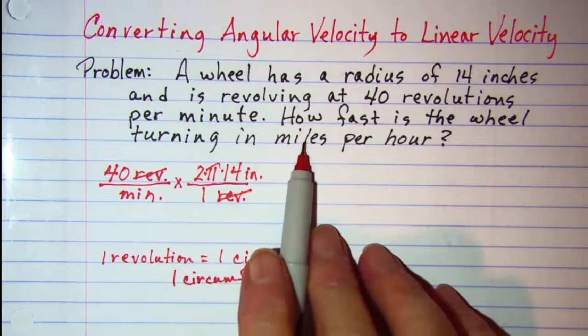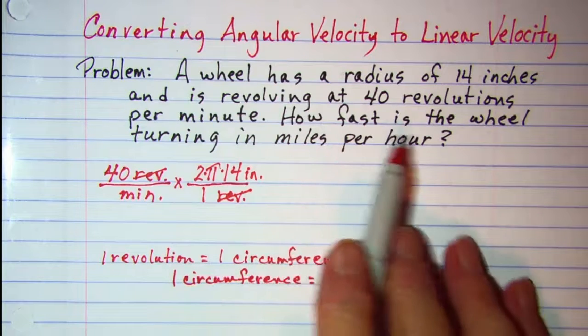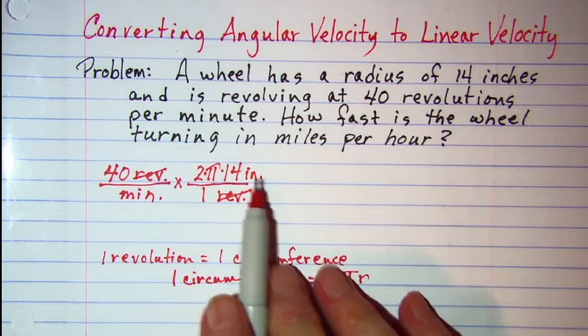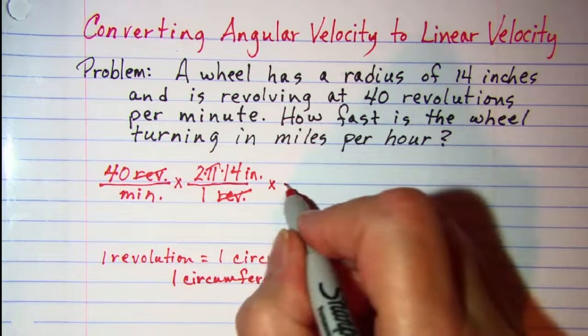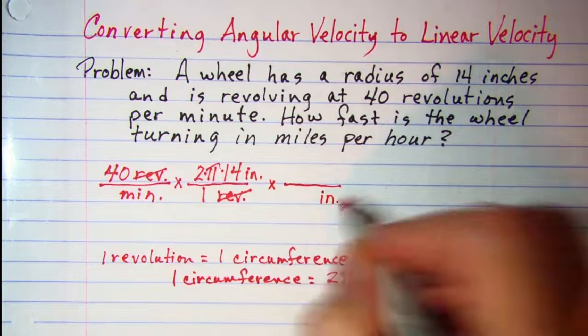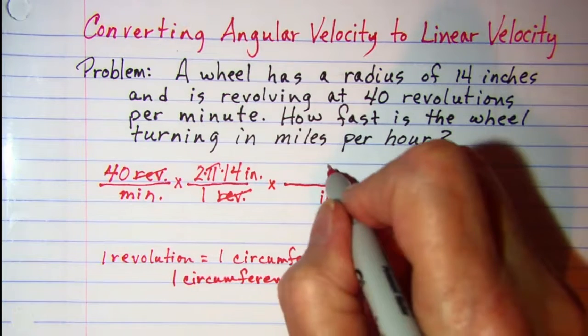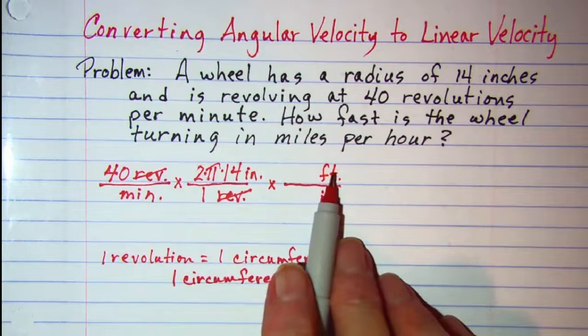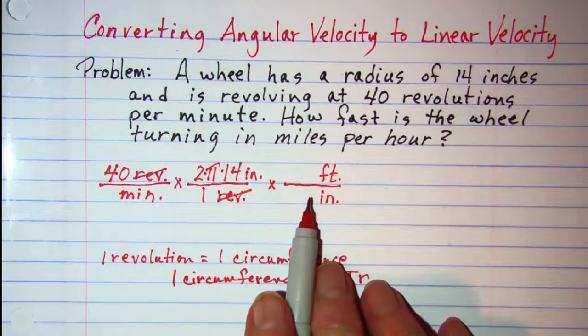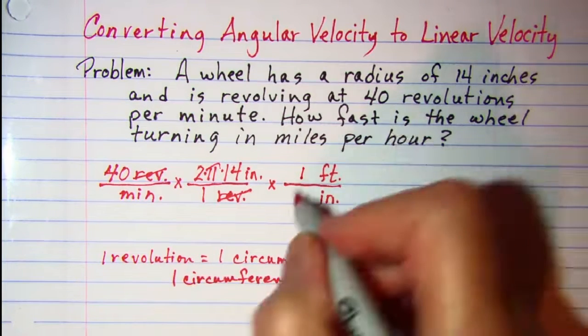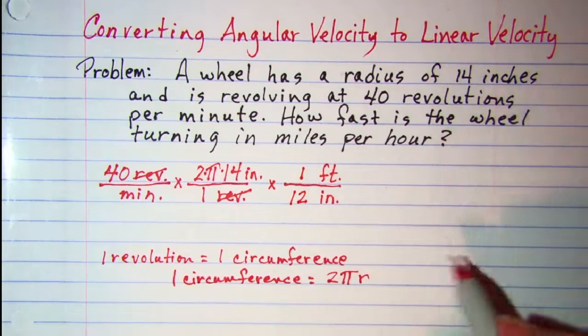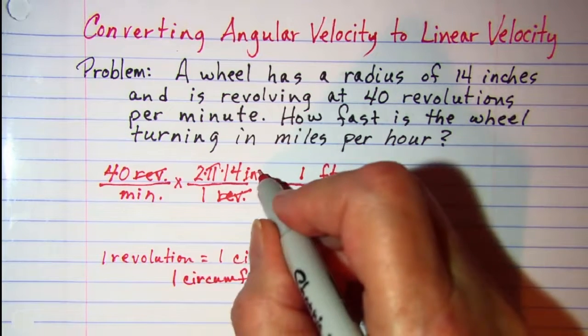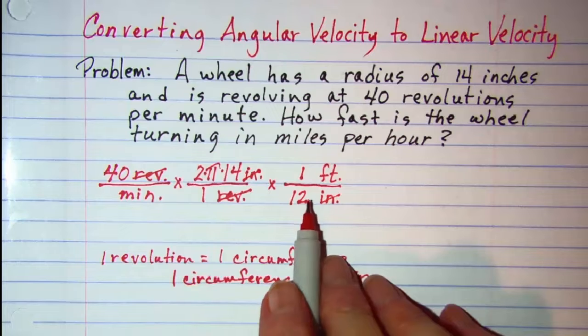Now I need to get to miles per some unit of time. So my next step would be to go from inches to feet and so I want to cancel off my inches unit and change it to feet. We know that one foot is 12 inches. So I have one here and 12, now I can cancel the word inches off leaving those numbers there.